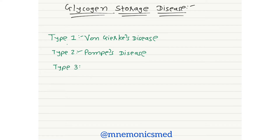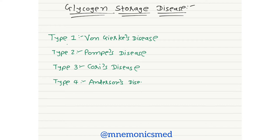Type 3 Glycogen Storage Disease is Cori's disease — you have to remember Cori's disease for type 3. Now type 4 Glycogen Storage Disease is Anderson's disease — you have to remember type 4 disease is Anderson's disease.